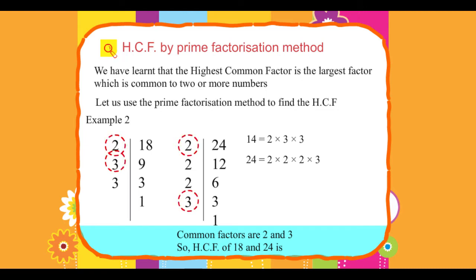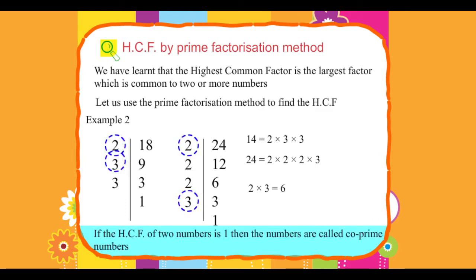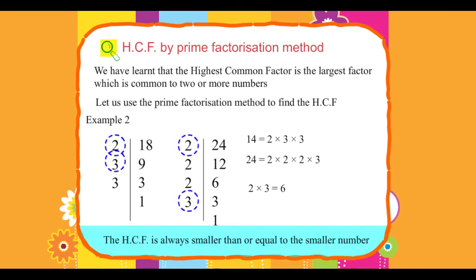So, HCF of 18 and 24 is 2 × 3 = 6. Note: If the HCF of two numbers is 1, then the numbers are called co-prime numbers. The HCF is always smaller than or equal to the smaller number.